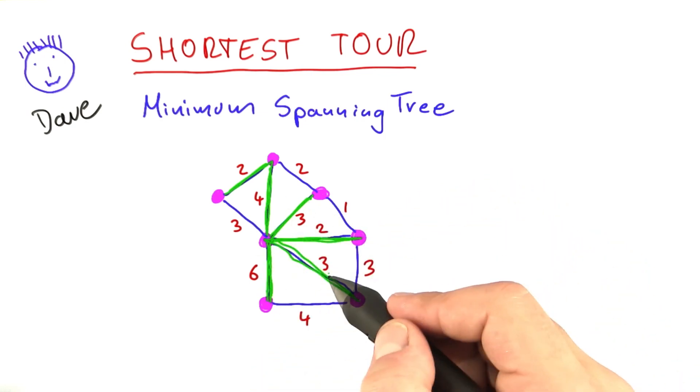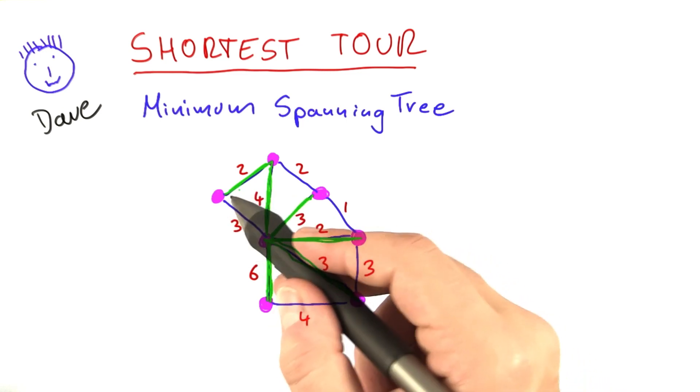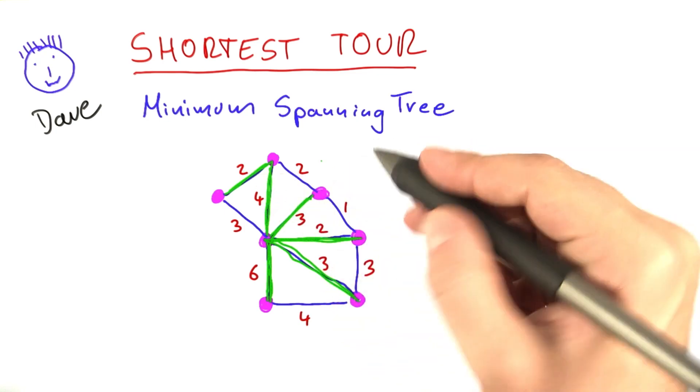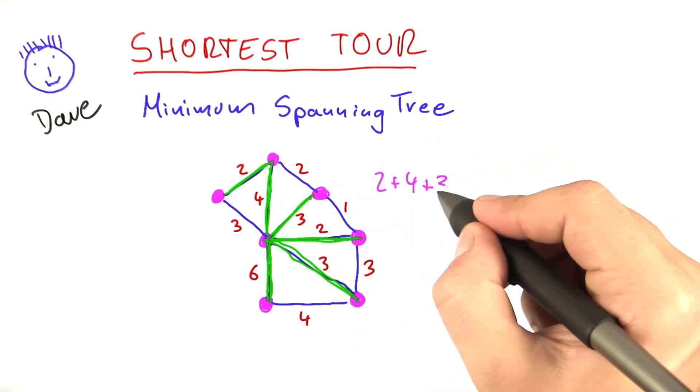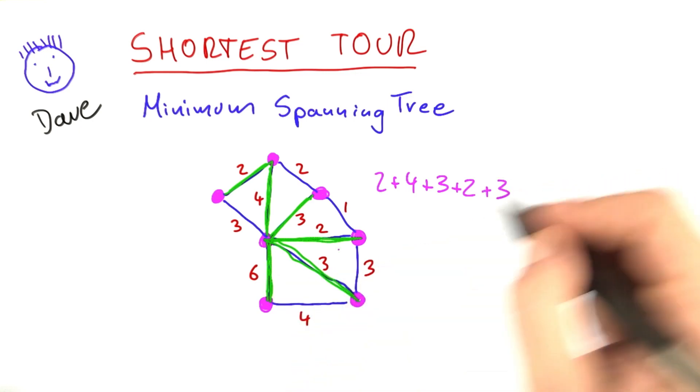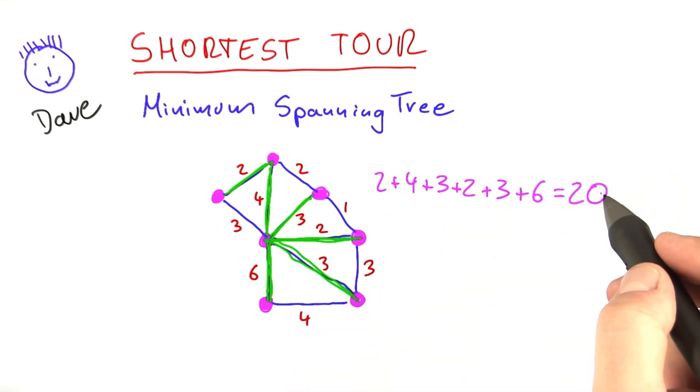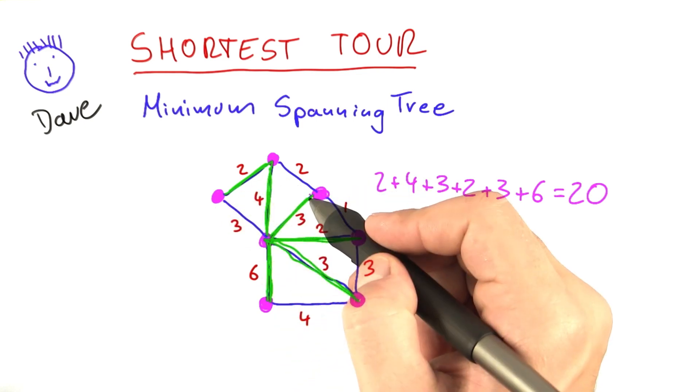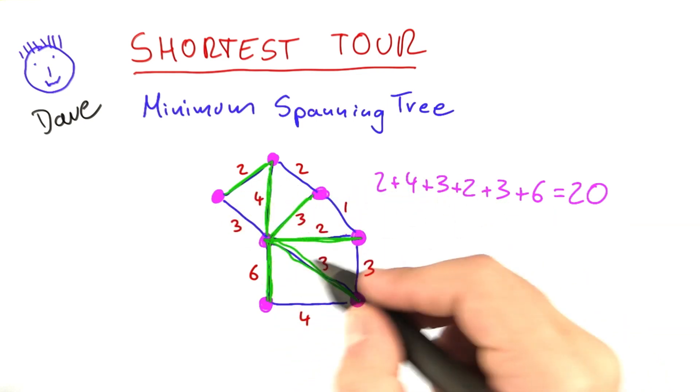And what you can do if you have a graph like this where you have numbers attached to the edges is for each spanning tree, you can sum up those numbers. So here we have 2 plus 4 plus 3 plus 2 plus 3 plus 6, and the sum of that is 20. And so what you say is that this spanning tree here has a weight of 20.